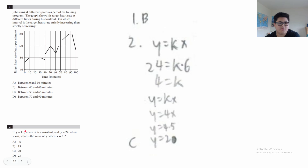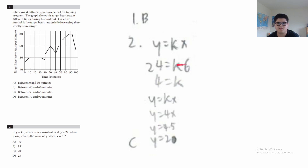Question 2: if y = kx where k is a constant and y = 24 when x = 6, what is the value of y when x = 5? Solve for k: 24 = k × 6, so k = 4. Then y = 4x, and substituting x = 5 gives y = 20. The answer is C.